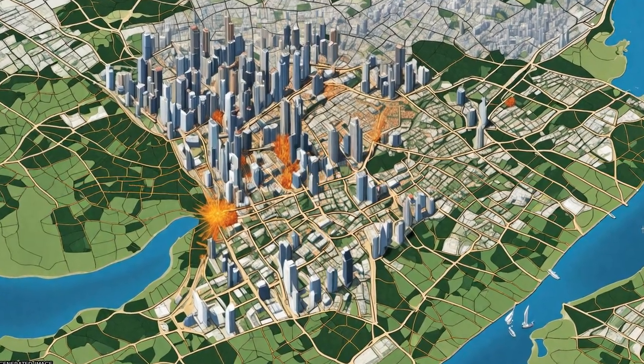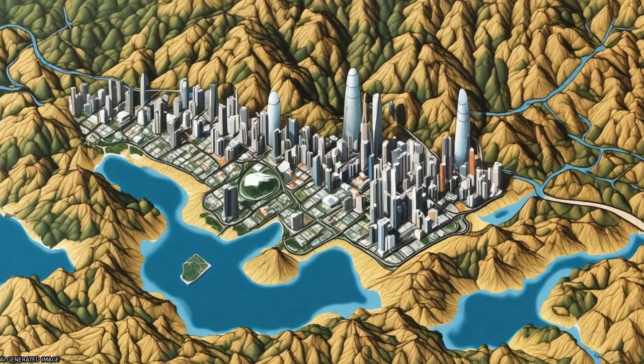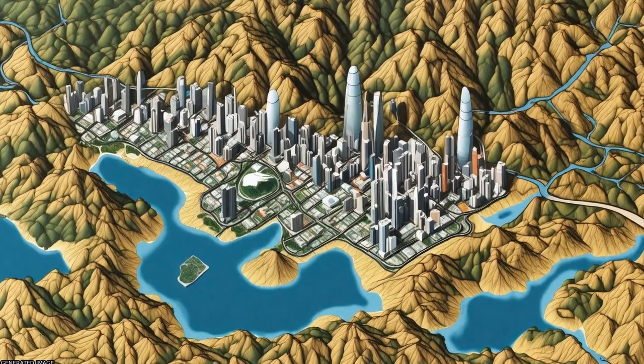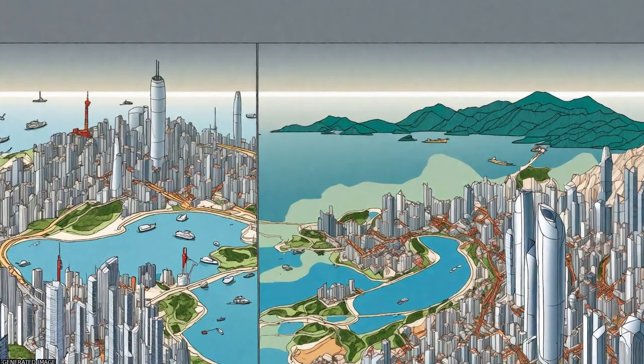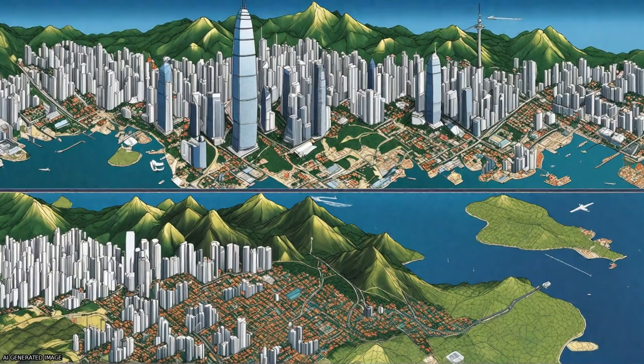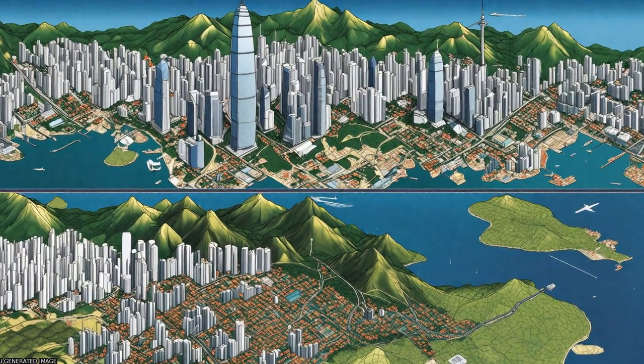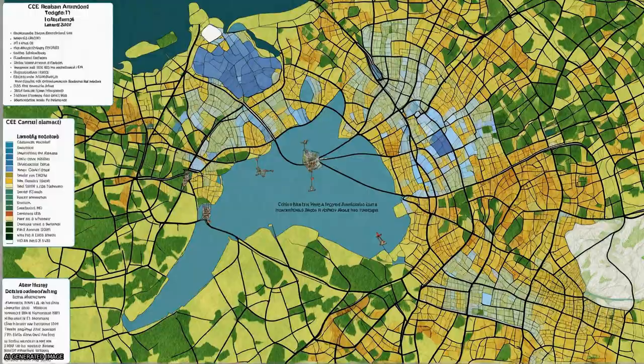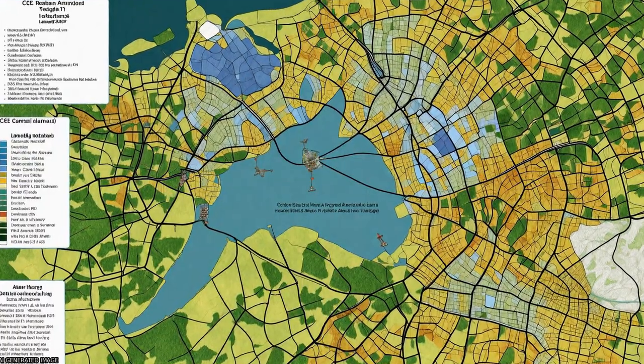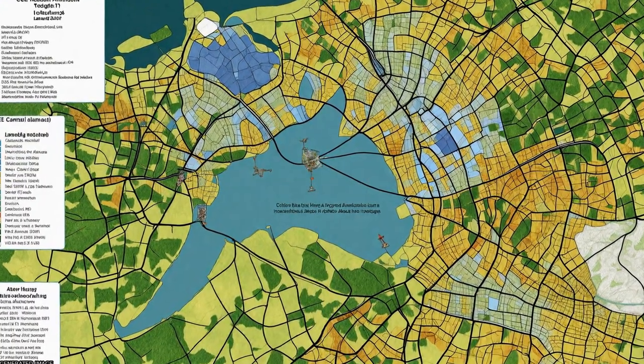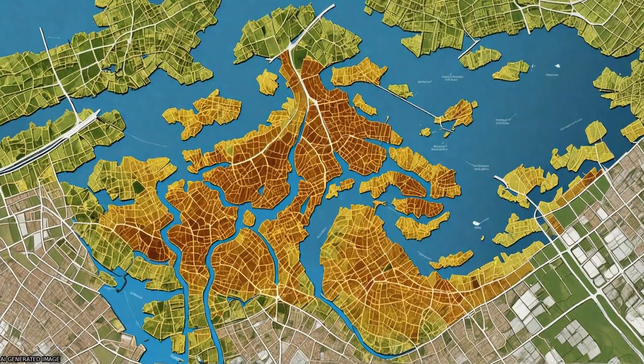Results indicate that three suburban areas — namely Kowloon, Northern Hong Kong Island, and Hong Kong International Airport — are mainly affected by urban heat island.